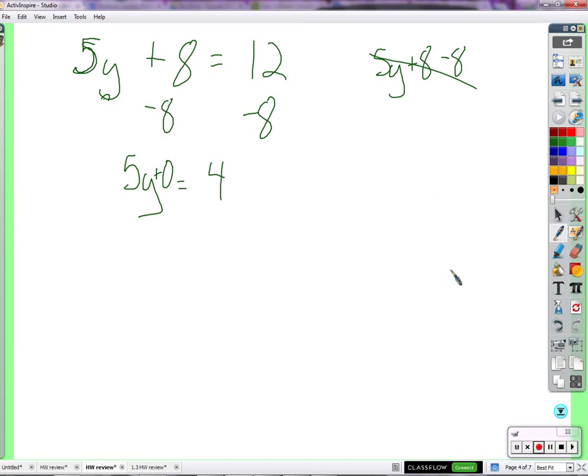Here's our 5y equals 4. Robert? Well, we divide 5 on each side. 5 by 5. Because 5 divided by 5 is? 1. 1. 1y equals 4 fifths.